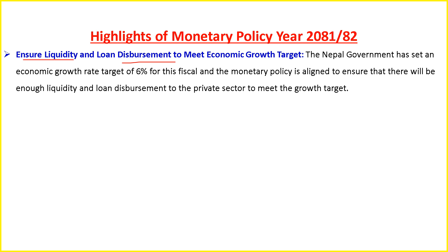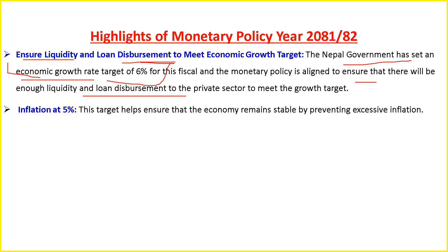The government has set an economic growth rate of 6 percent for fiscal year 2081/82, and the monetary policy is aligned to ensure there is enough liquidity and credit disbursement to the private sector to meet this target. Similarly, the inflation rate is targeted at 5 percent. This target helps to ensure the economy remains stable by preventing excessive inflation.